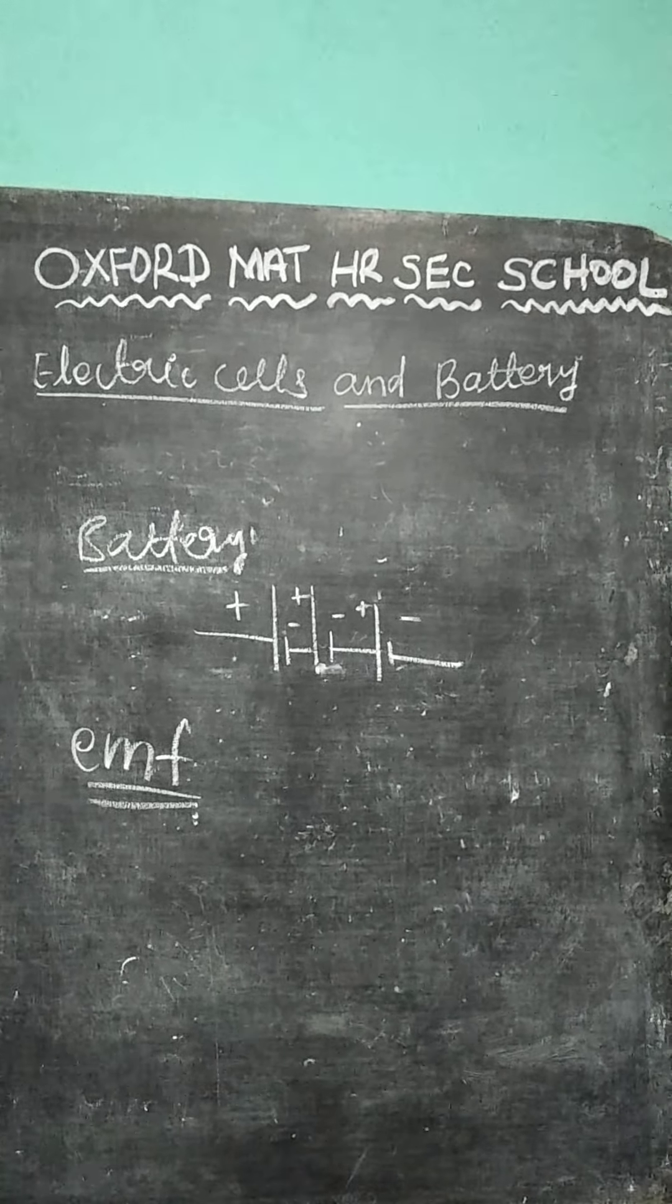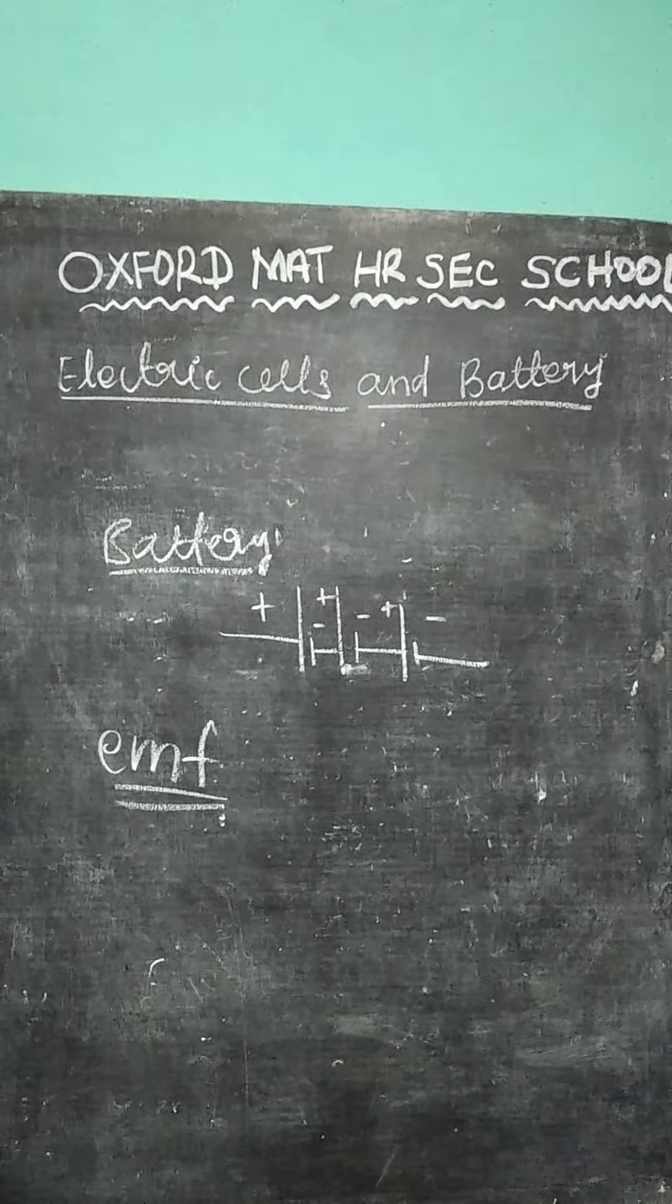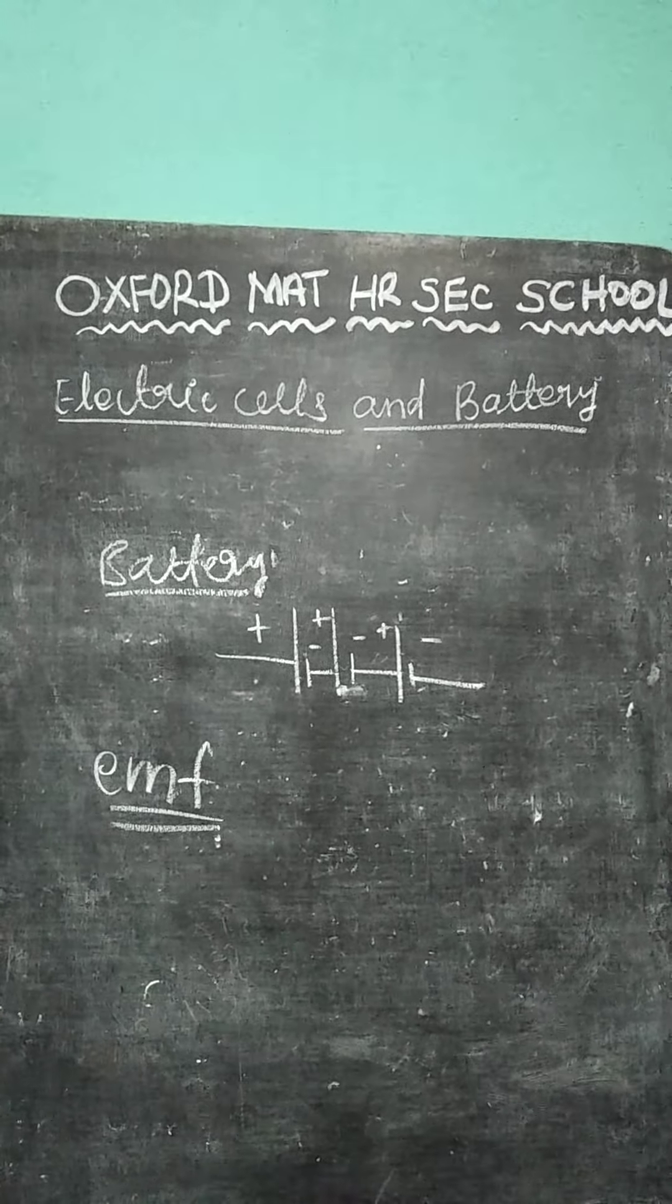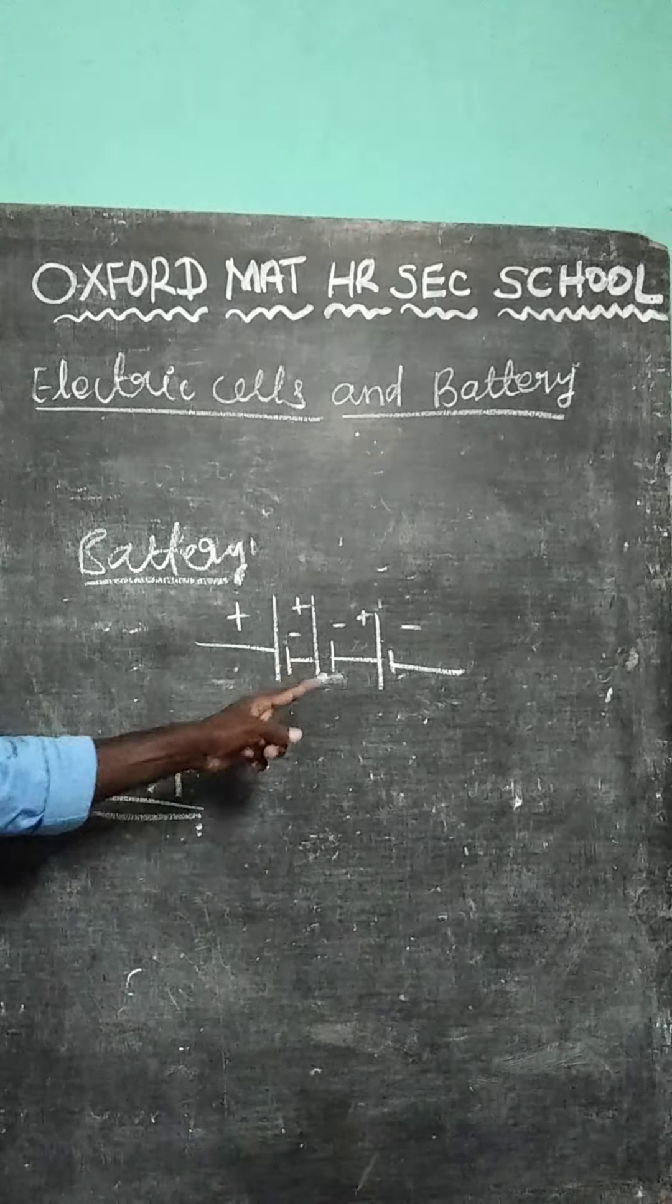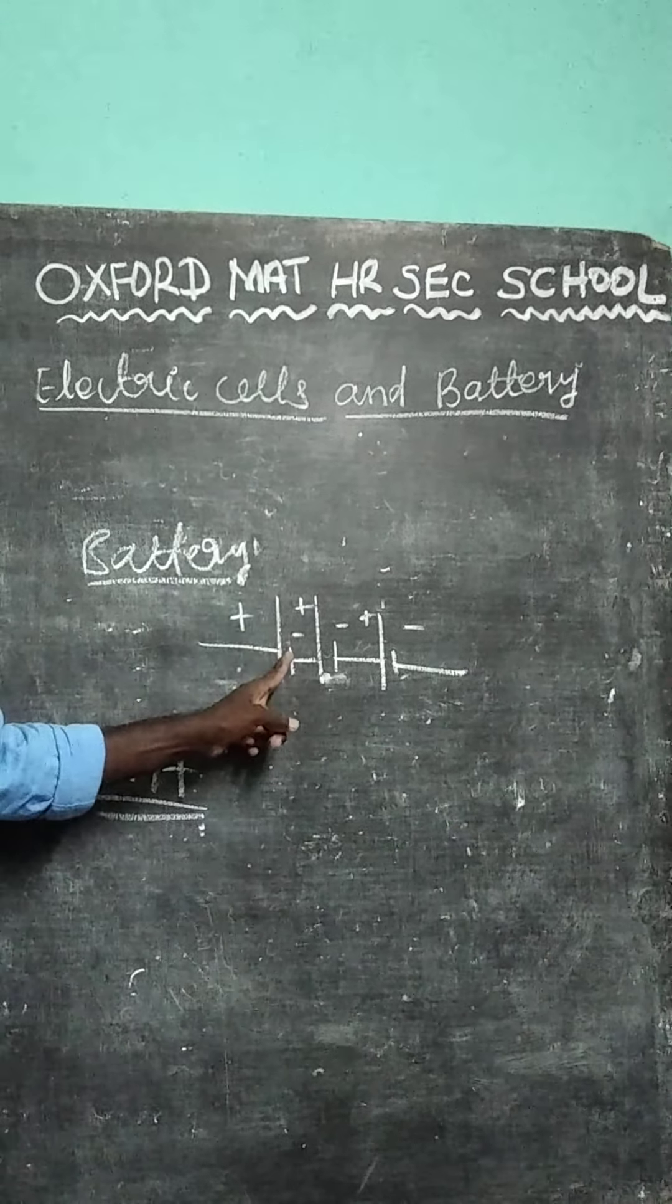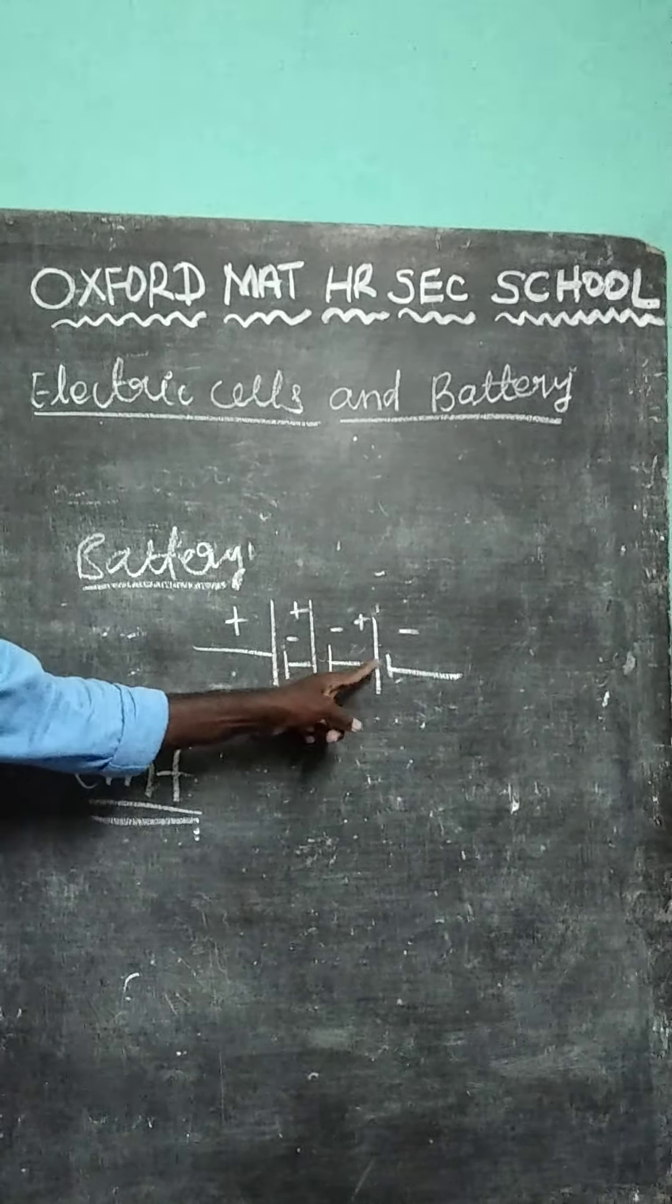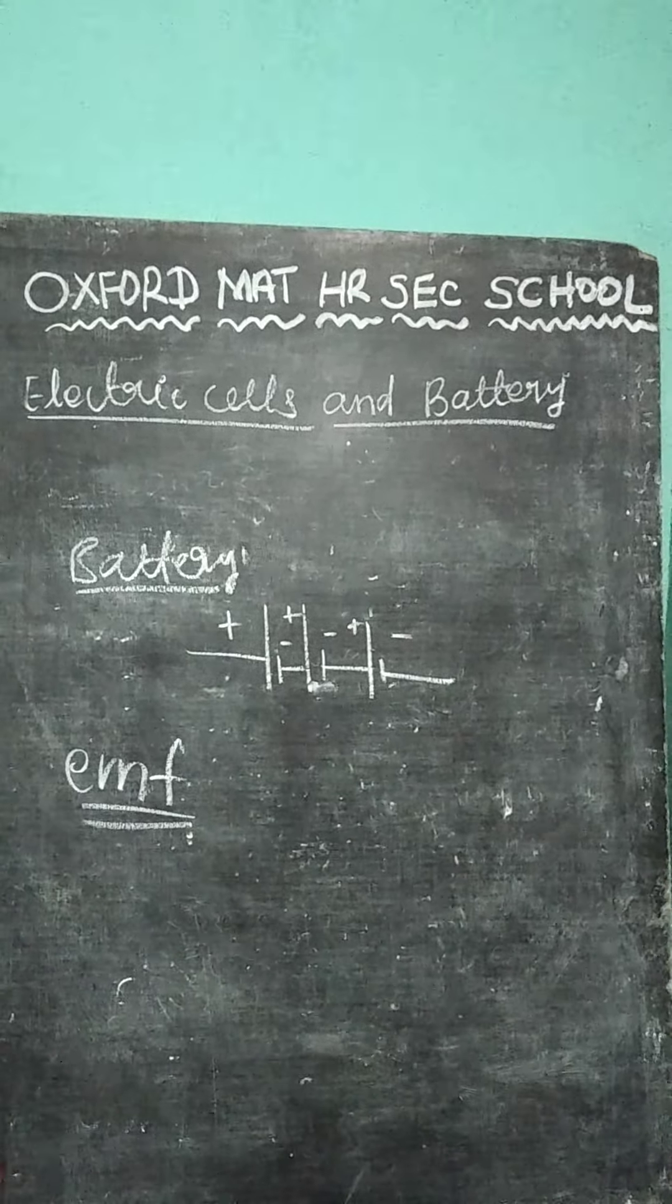The series connection, two types of there. One is series connection. Second one is parallel connection. So, what is mean by series connection? End to end. Positive, negative. Again, positive, negative. Again, positive, negative. Again, positive, negative connection means series connection.